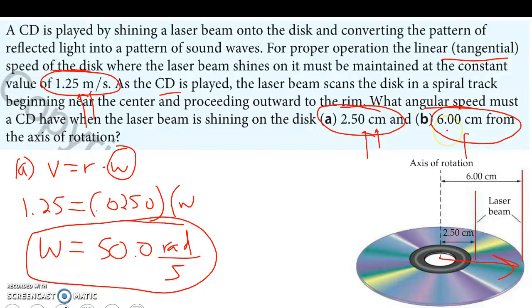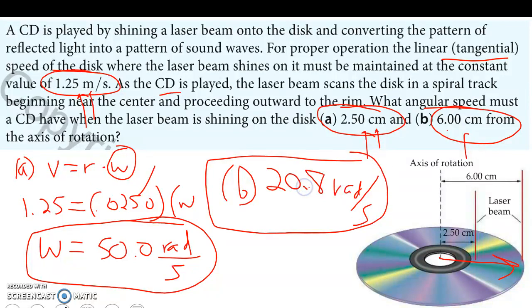Substituting this distance into here for B, you can punch the numbers in, but you're going to actually get a slower angular velocity, which should make sense, of 20.8 radians per second. That's just another use of this equation.